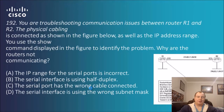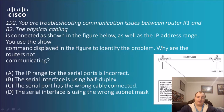Question 192: you are troubleshooting communication issues between router 1 and router 2. The physical cabling is connected as shown in the figure, as well as the IP address range. You use the show command displayed in the figure to identify the problem — why are the routers not communicating? Looking at the show controllers command for serial 0/1/0, router 1 would normally have the DCE end, but here it's configured to DTE. So the answer is C — the serial port has the wrong cable connected.